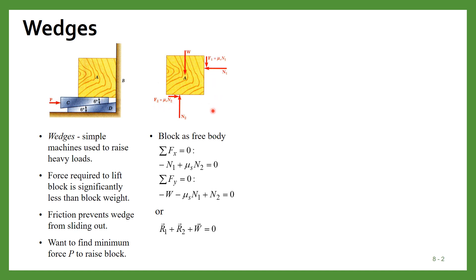For equilibrium we can equate: summation of fx equal to 0 and fy equal to 0. In the x direction we have minus n1 plus mu_s times n2 equal to 0, and in the y direction we have minus w minus mu_s times n1 plus n2 equal to 0. We can also write this in the form of resultants, finding r1 and r2, and write in vector form: r1 plus r2 plus w should equal 0.